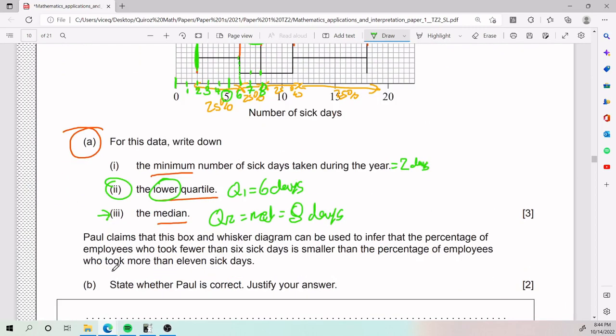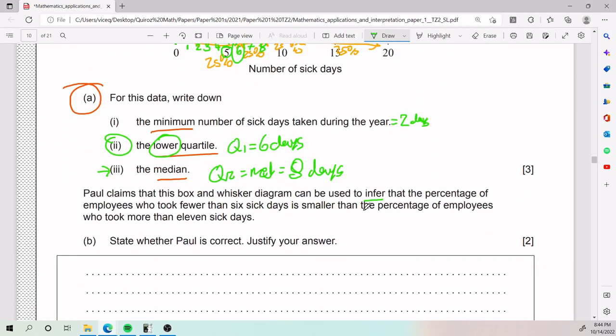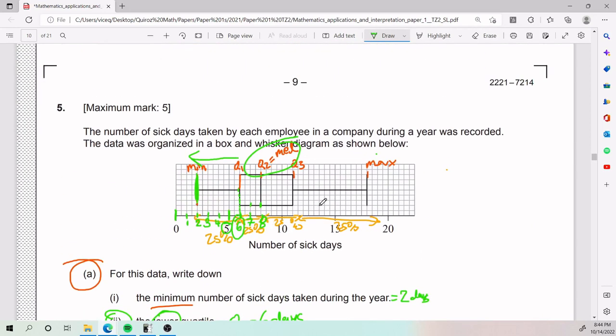We have Paul. Paulie, my guy Paulie, claims that this box and whisker diagram can be used to infer that the percentage of employees who took fewer than six days—so fewer than six days is from here to here because that is where my six is—is smaller than the percentage of employees who took more than 11. Six days, so 11, where is 11?